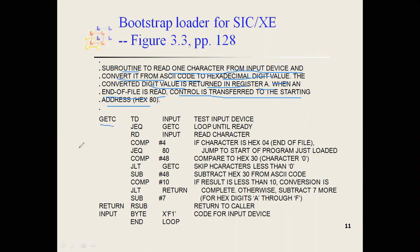GET_C reads one character at a time. The command 'test device' is used, where 'input' is a label holding the details of input device F1. First we test whether the input device is ready. If the result equals 0, the device is not yet ready, and we jump back to GET_C to keep checking. If it is not equal to 0, the device is ready and we move to the next instruction. The RD instruction then reads from the input device F1.